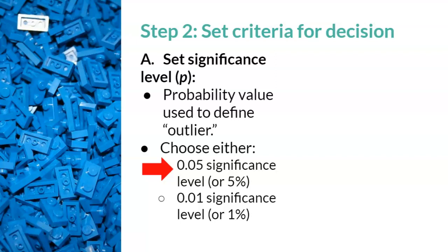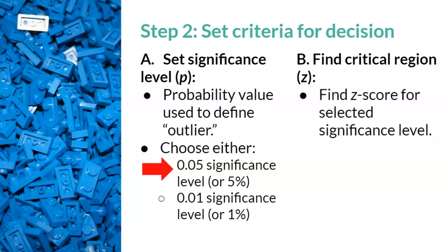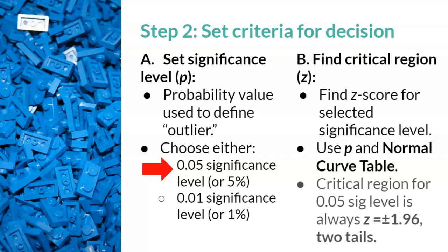Statisticians made it even easier for us and said that 0.05 is the preferred significance level to use. Now that we know our p, we need to find the critical value, or critical region, that tells us what the sample should look like if the study worked. We will find the corresponding z-score for the selected significance level. We will use the normal curve table to find the z. The next slide will demonstrate why the critical region for a 0.05 significance level is always z equals plus or minus 1.96 two tails.